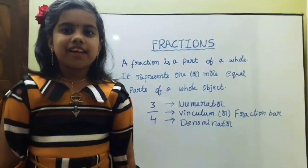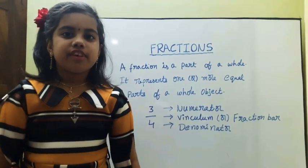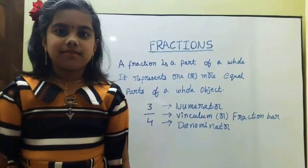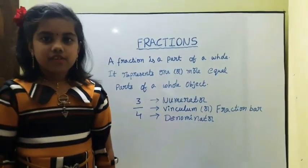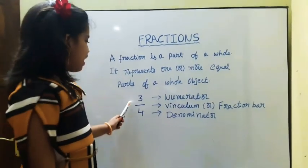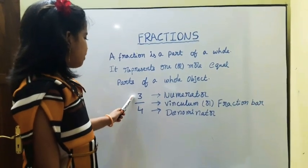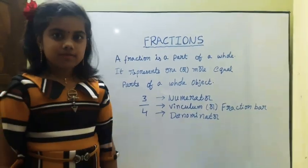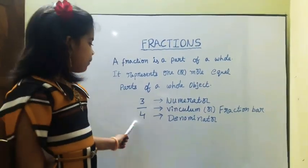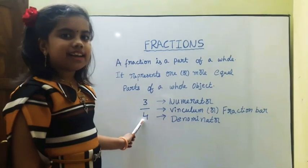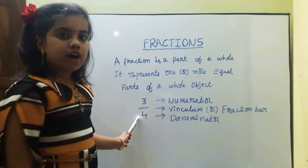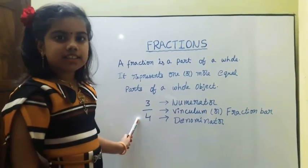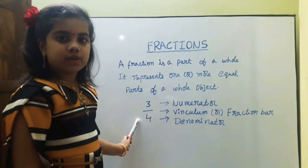The number below the fraction bar is called the denominator. The numerator indicates the number of equal parts considered. A vinculum is the line that divides the numerator and denominator. The denominator indicates the total number of equal parts the whole is divided into.